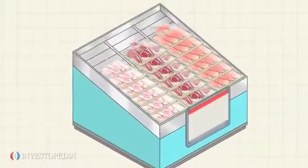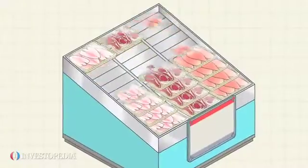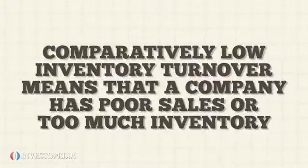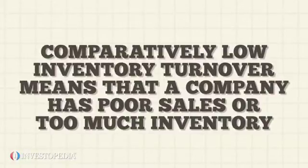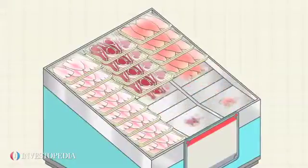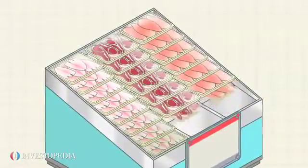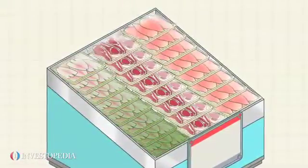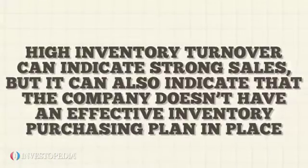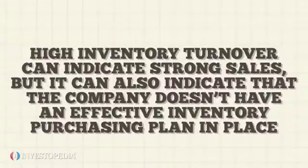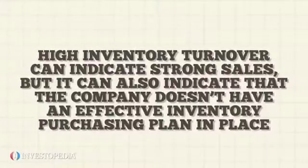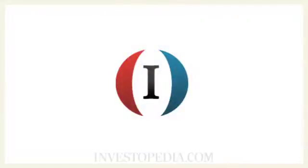While inventory turnover is faster in some industries such as grocery stores than in others such as department stores, comparatively low inventory turnover means that a company has poor sales or too much inventory. In addition to poor sales, inventory that sits around can deteriorate and lose value, which is bad for the company's bottom line. High inventory turnover can indicate strong sales, but it can also indicate that the company doesn't have an effective inventory purchasing plan in place.